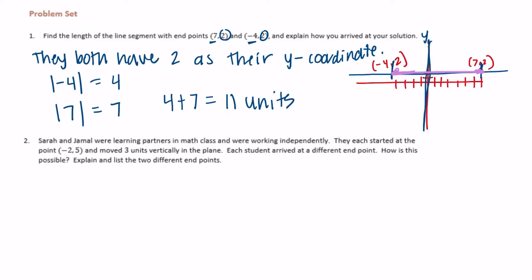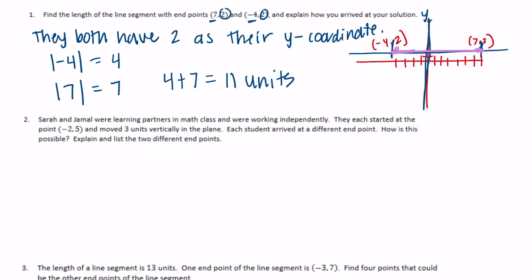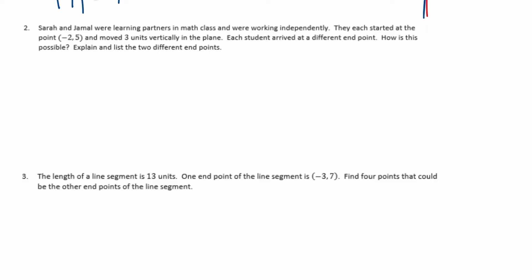Number two: Sarah and Jamal were learning partners in math class and were working independently. They each started at the point (-2, 5) and moved three units vertically in the plane. Each student arrived at a different endpoint. How is this possible? Explain and list the two different endpoints. So they both start at (-2, 5) and move three units vertically. Vertically means up and down, so different choices could be made.